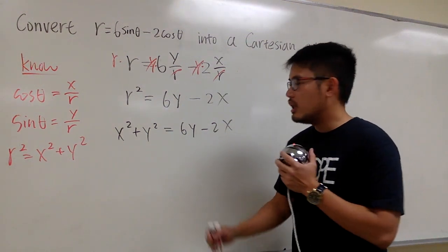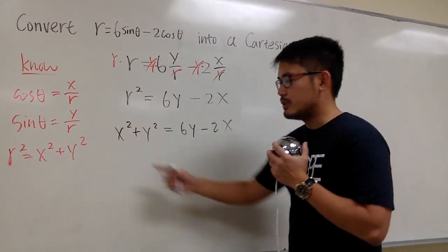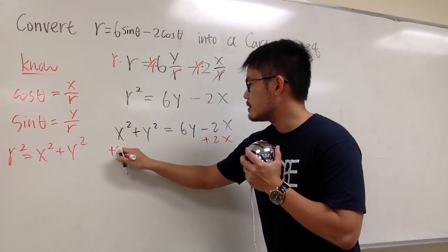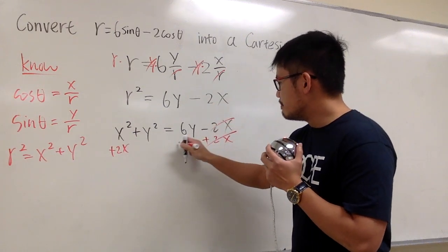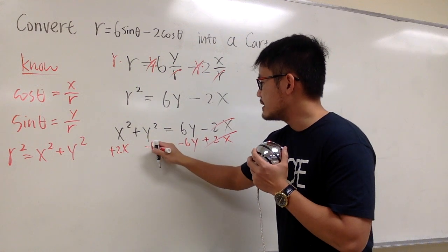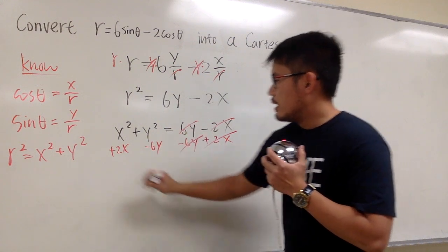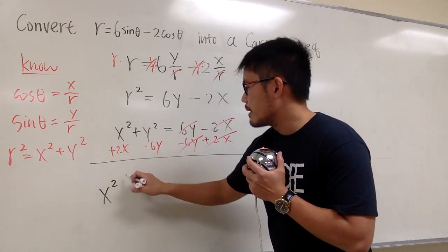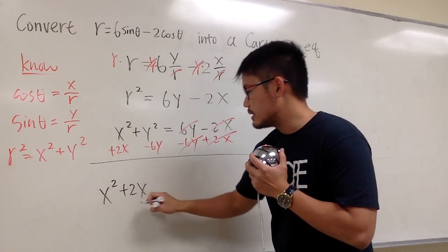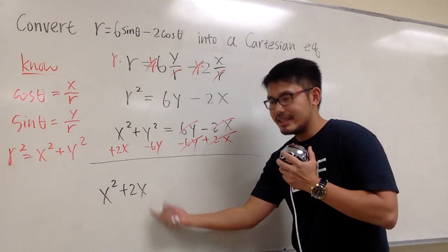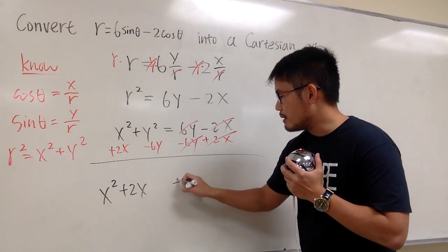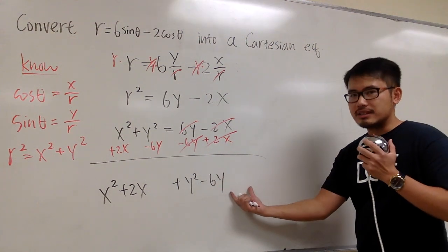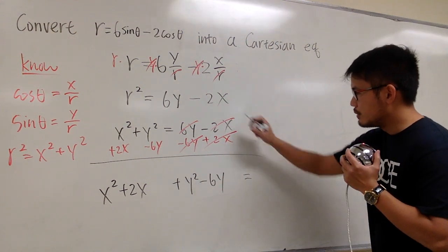And this is how we continue. Let's move this and that to the left-hand side. So let's add the 2x on both sides. And that's minus the 6y on both sides. All together, we see that we have x squared plus 2x. And then, let's leave a space. Continue by putting down plus y squared minus 6y and leave a space. Equals to 0.